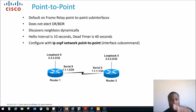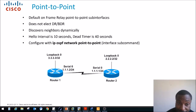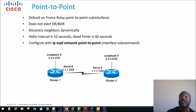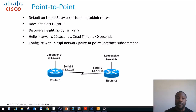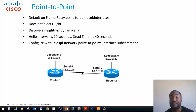There are only two routers there. It discovers neighbors dynamically — it just finds the neighbor because it's directly connected. By default, the hello interval is 10 seconds. It says hello every 10 seconds to make sure the neighbor is alive. The dead timer, by default, is four times the hello, which in this case is 40 seconds — 10 times four is 40. That's when it considers the neighbor dead. You configure this with the interface command: IP OSPF network point-to-point.